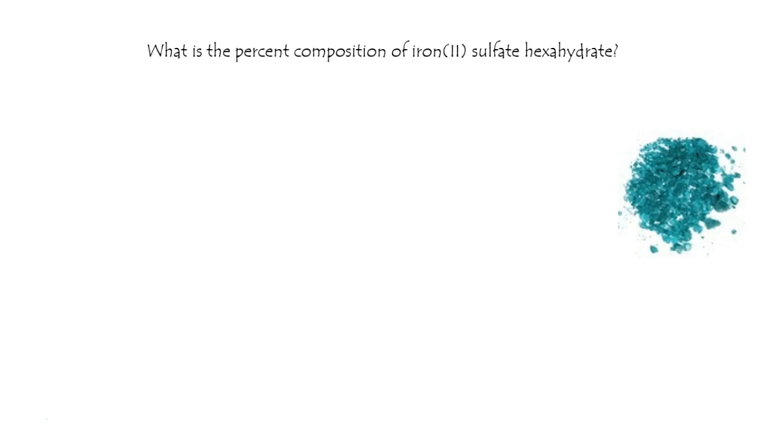just see iron, sulfur, oxygen, and hydrogen, and then we figure out the molar mass of the whole thing, and then we divide up the pie and we should get 100 percent when we find the relative abundance of each element.